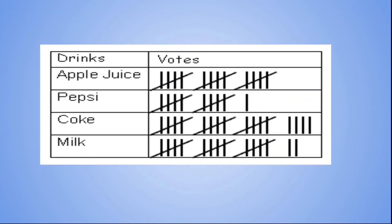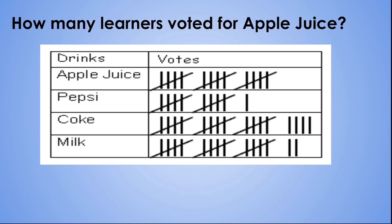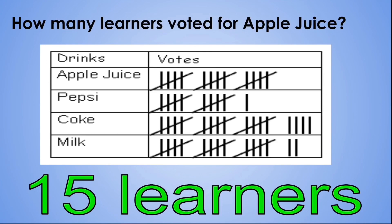Let's take a look at the following tally chart. This tally chart shows us how learners voted for their favorite drink. On the left hand side, we have the different drinks: apple juice, Pepsi, Coke, and milk. On the right hand side, we have the votes — the amount of learners who voted for each drink. How many learners voted for apple juice? Let's count together: 5, 10, 15. 15 learners voted for apple juice.